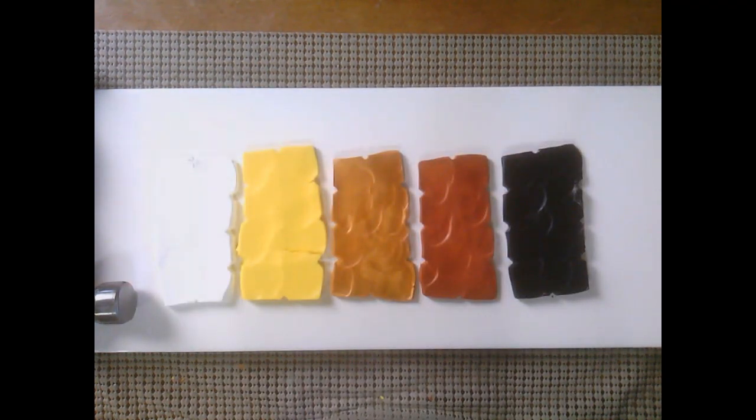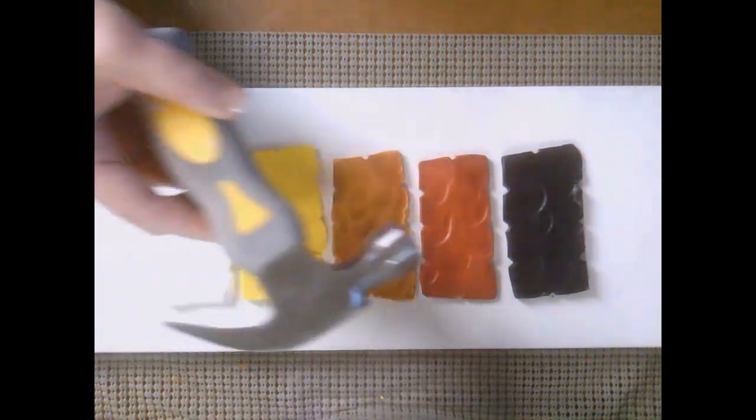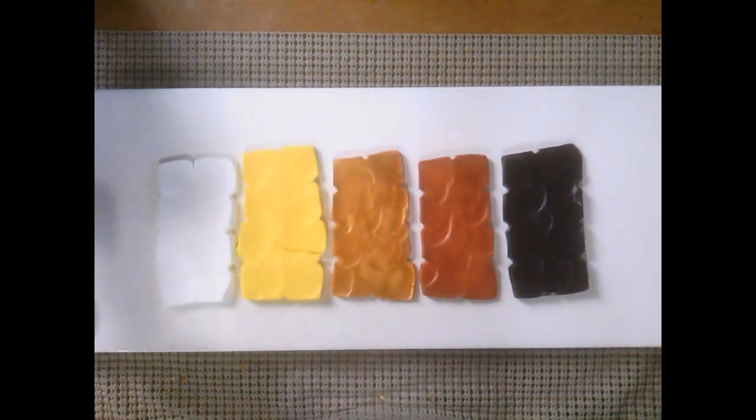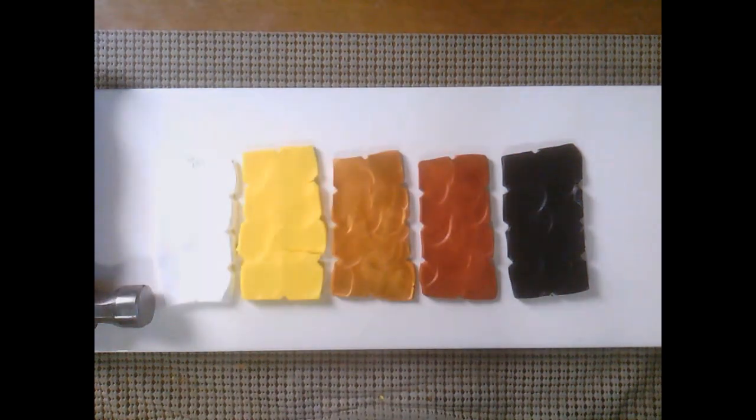The first thing you need to do is choose the colors for your layers. Today I'm using white, yellow, gold, copper, and black. I've already started using my hammer to condition the clay, but I can also use a pasta machine or craft machine to help speed up the process. I want each layer to be smooth and supple, as if it's already factory conditioned.